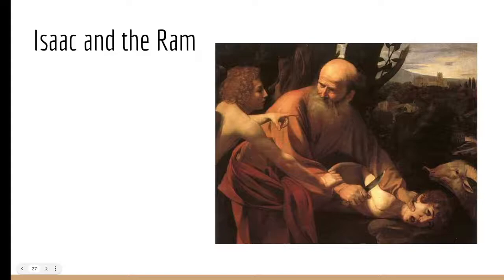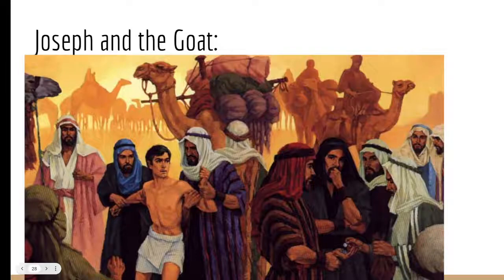When I started out, I was trying to find the single meaning of the text, as if one person wrote it with one thing in mind. I no longer believe that's possible. The text was written by many different people. Joseph and the goat is another example: Joseph's brothers plan to kill him but instead kill a goat in his place, put the blood on his coat of many colors, tell their father Joseph is dead — and then Joseph is expelled into Egypt but saved by the goat substitute.